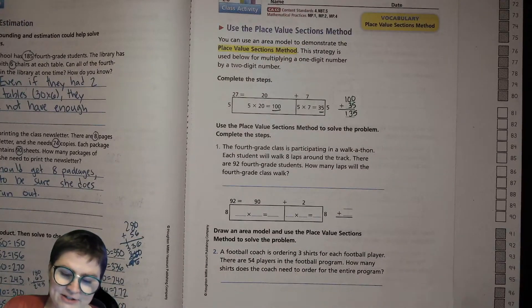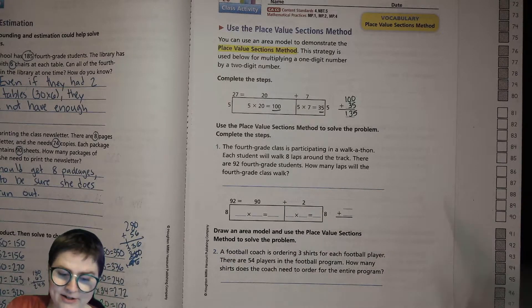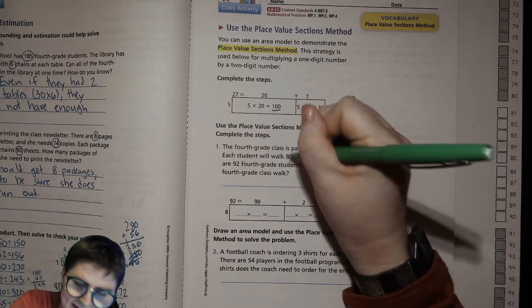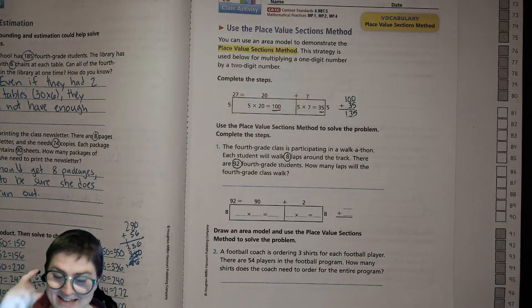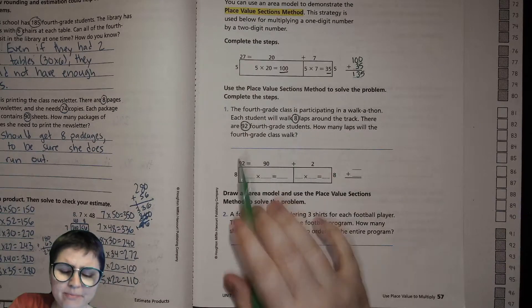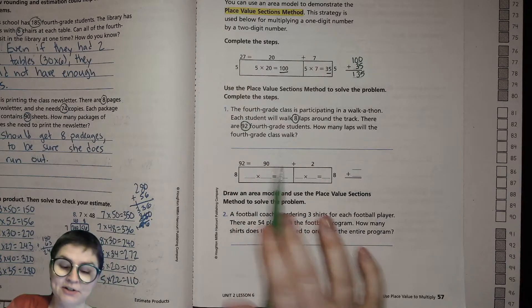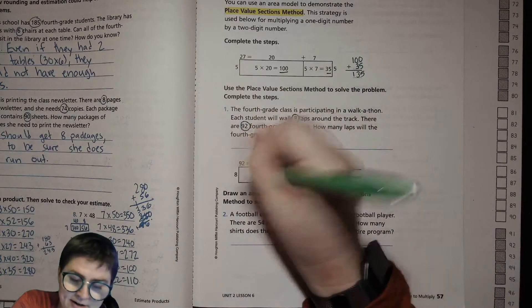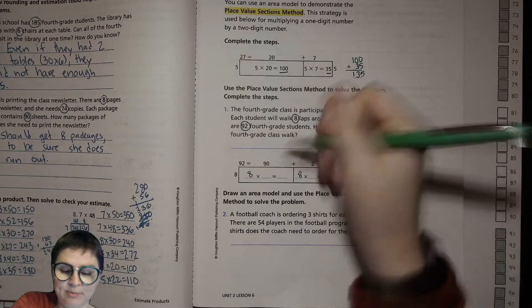Now let's use the place value sections method to solve this problem. The fourth grade class is participating in a walk-a-thon. Each student will walk 8 laps around the track. There are 92 fourth grade students. How many laps will the fourth grade class walk? Here we have our single digit and our double digit. We're putting our single digit on this side and breaking our double digit by place value: 90 and 2.